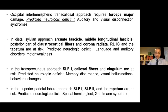The occipital interhemispheric transcallosal approach requires forceps major damage, with related auditory and visual disconnection syndromes. In the distal Sylvian approach, the arcuate fascicle, middle longitudinal fascicle, posterior part of corticostriate fibers, corona radiata, retrolenticular internal capsule, and tapetum are at risk, with related deficits of language and auditory disorders and motor weakness. In the transprecuneus approach, SLF1, callosal fibers, and cingulum are at risk, with related deficits of memory disturbance, visual hallucinations, and behavioral changes. In the superior parietal lobule approach, SLF1, SLF2, and tapetum are at risk, with predicted deficits of spatial hemispatial neglect and Gerstmann syndrome.